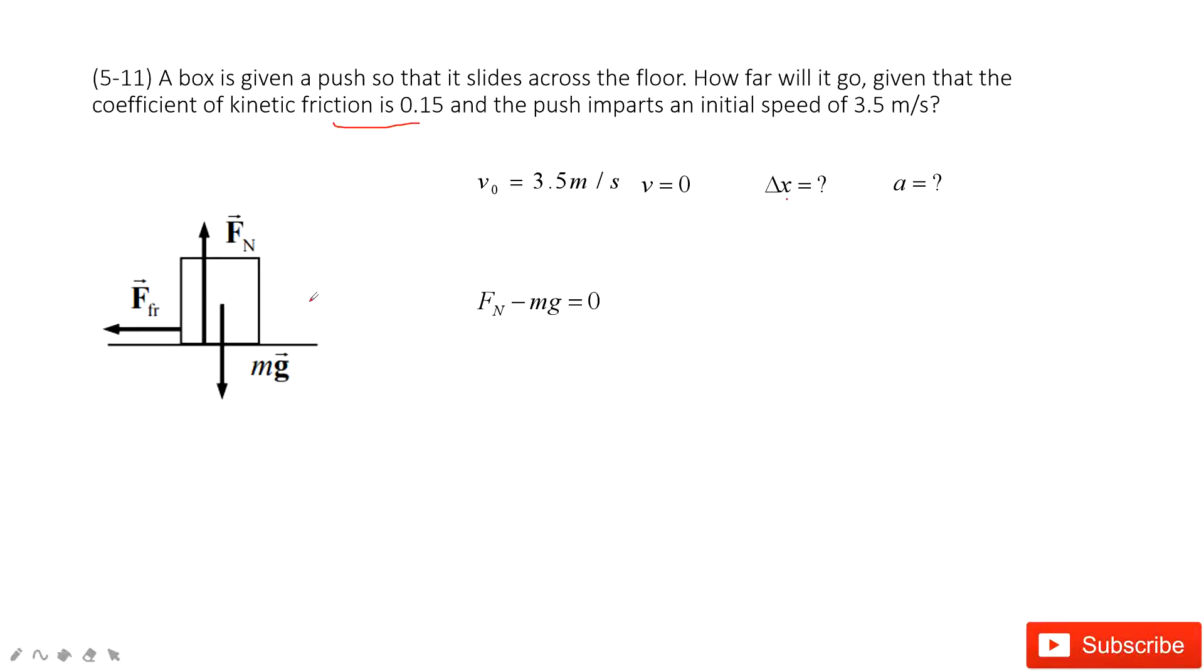Look at the horizontal component. Because this one is pointing in the negative x direction, negative friction equals mass times acceleration. The friction equals the coefficient mu_k times the normal force.